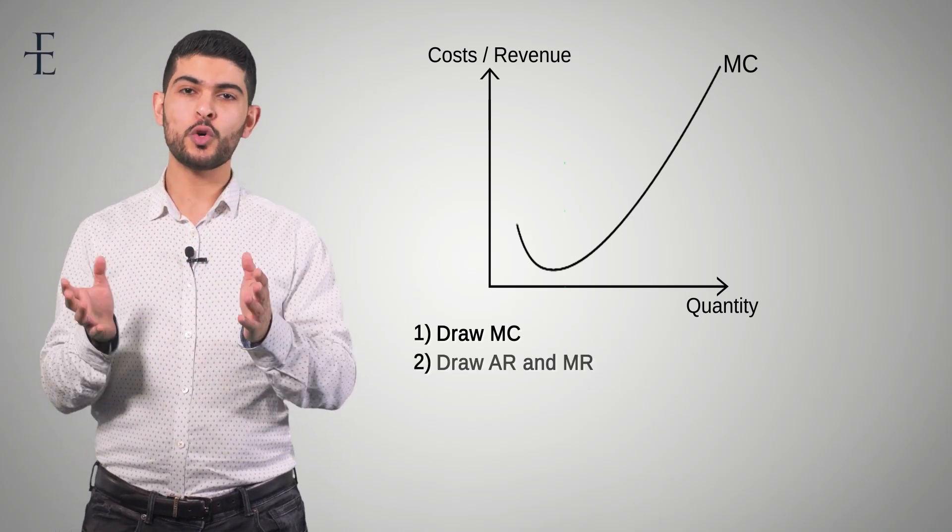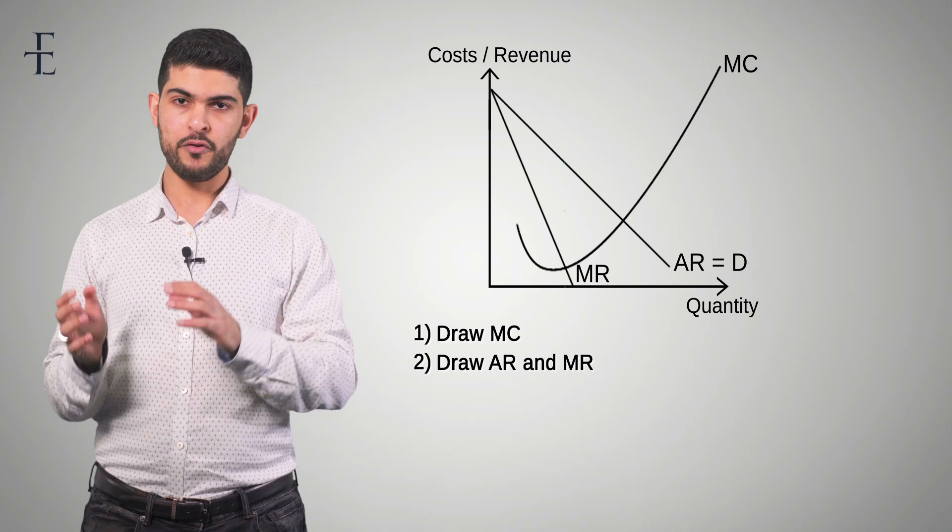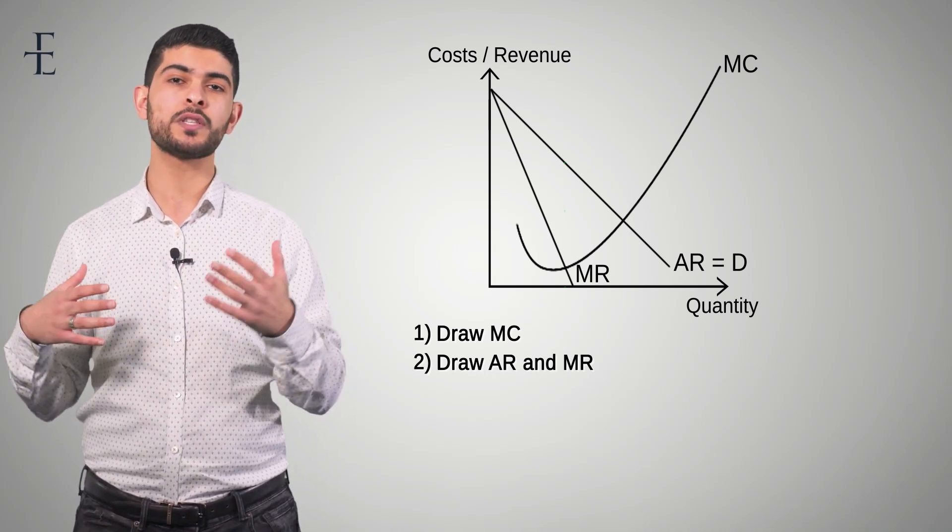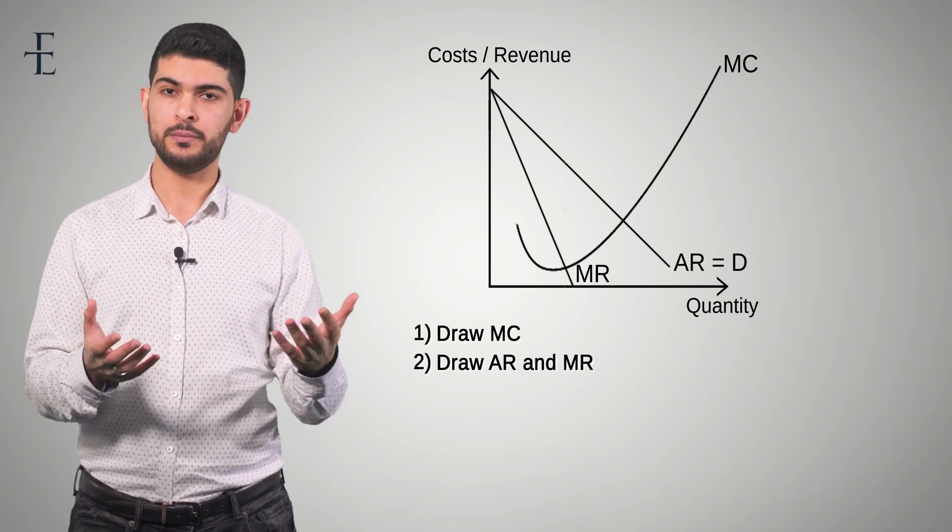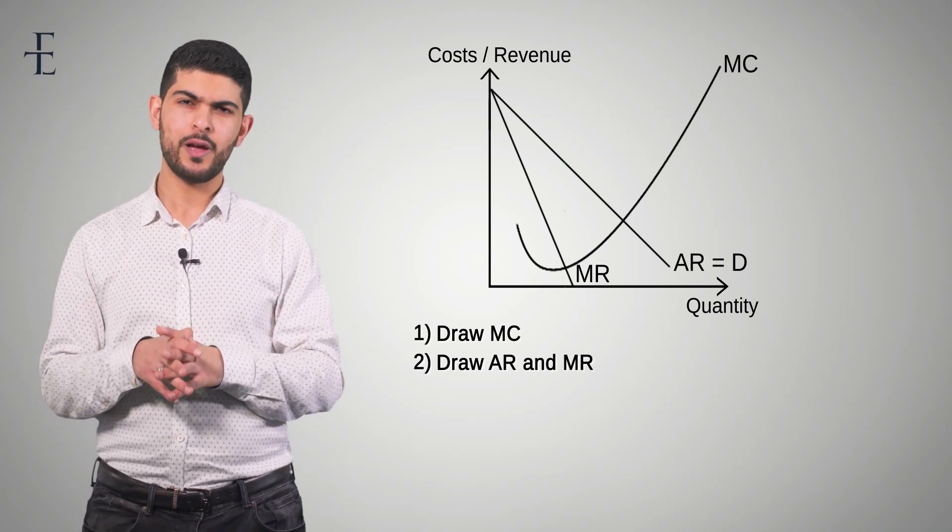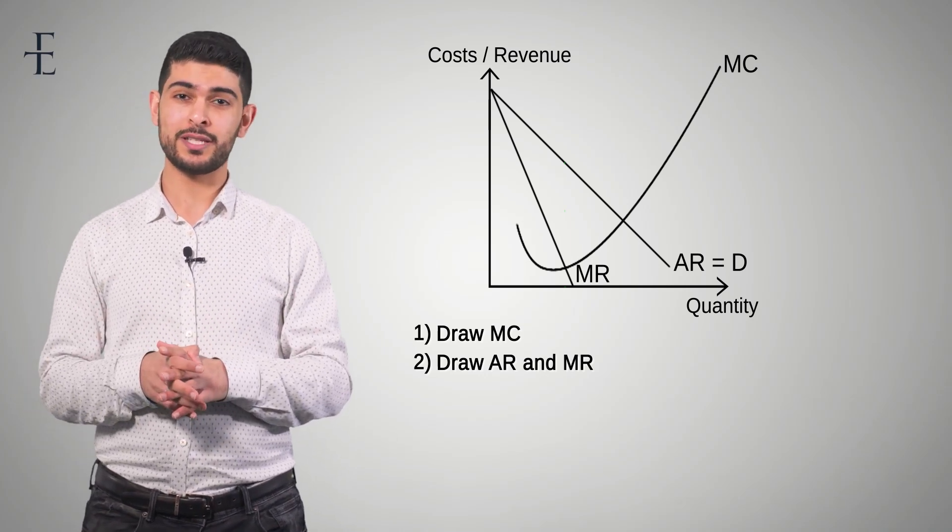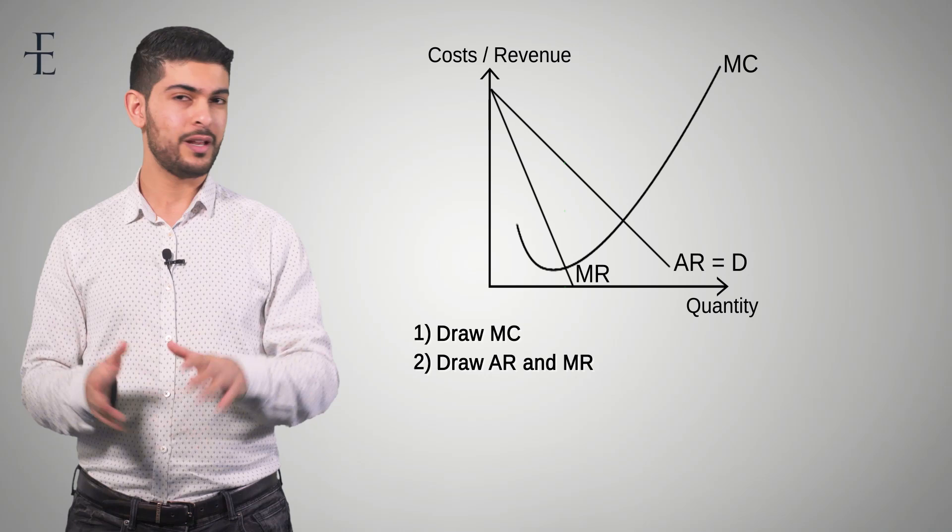Step two. Draw AR and MR. Now remember the relationship between average revenue and marginal revenue is always that they are half the slope of one another. So draw the AR and MR. Now step three. What would you do now? The vast majority of students that I ask always say, oh, I would draw the AC curve now. No, I never, ever, ever want you to draw the AC curve at this point.